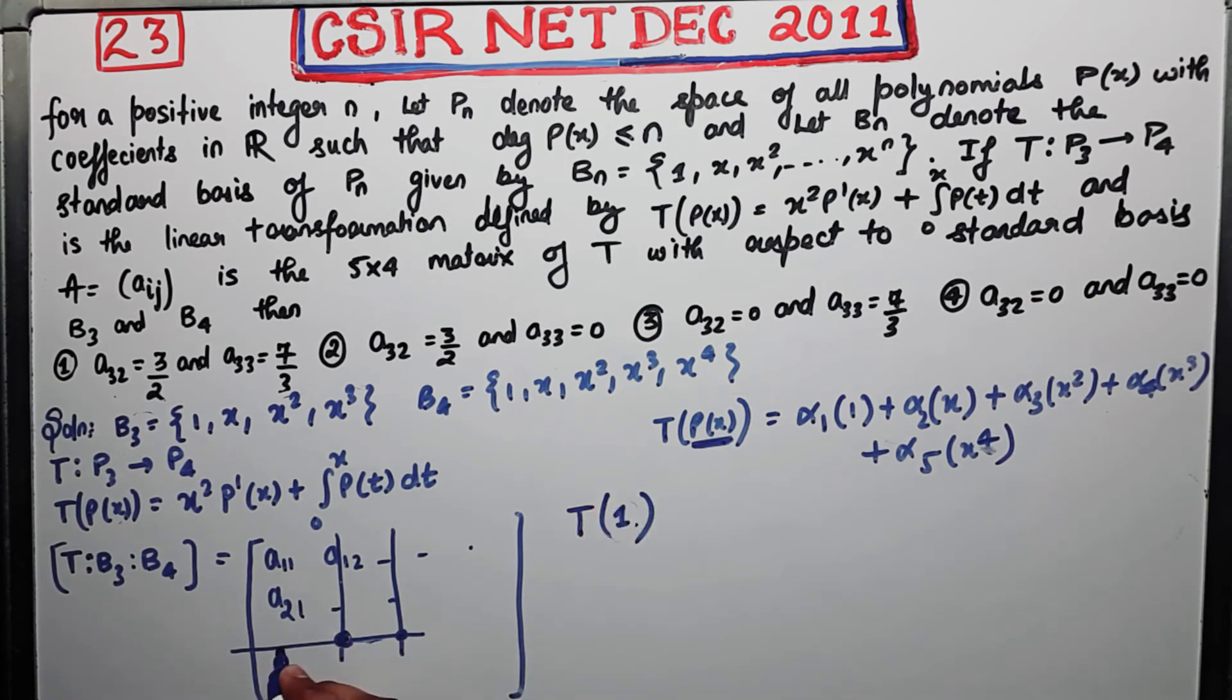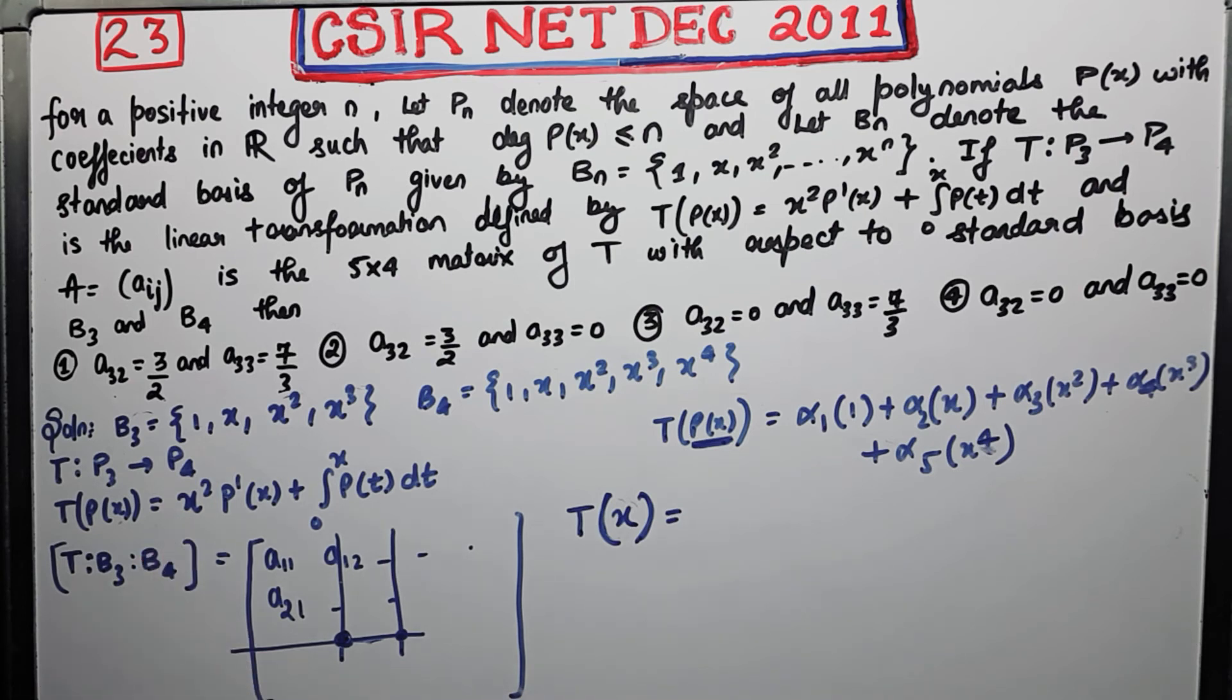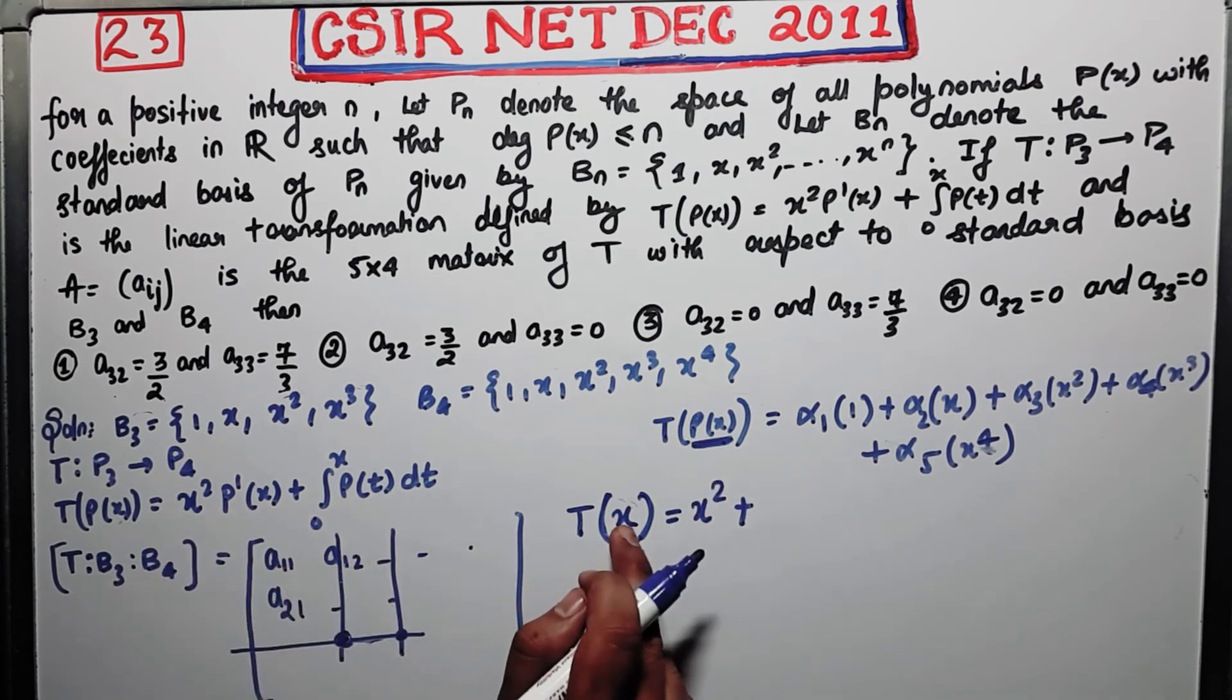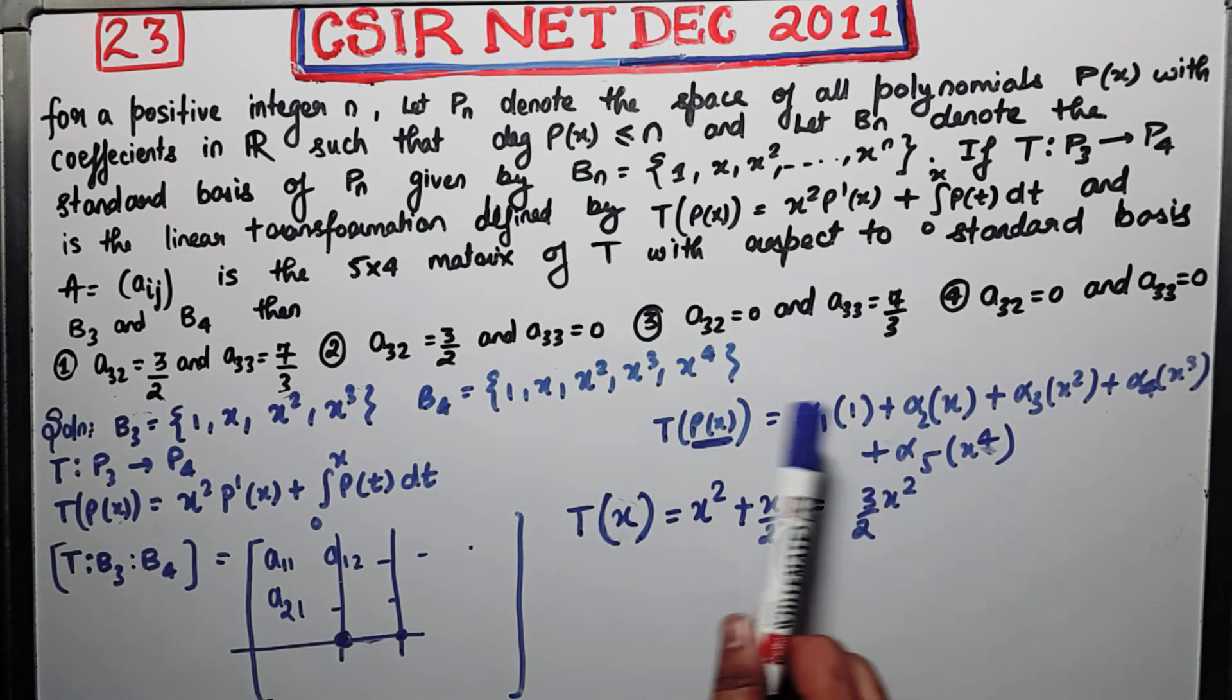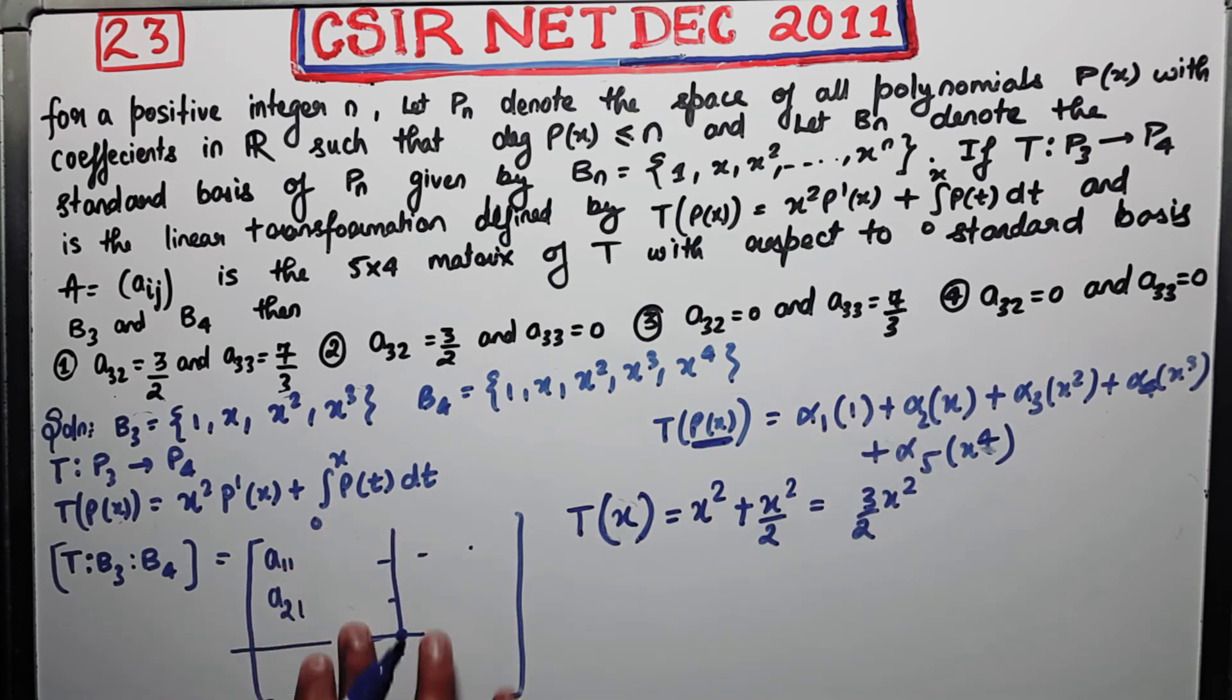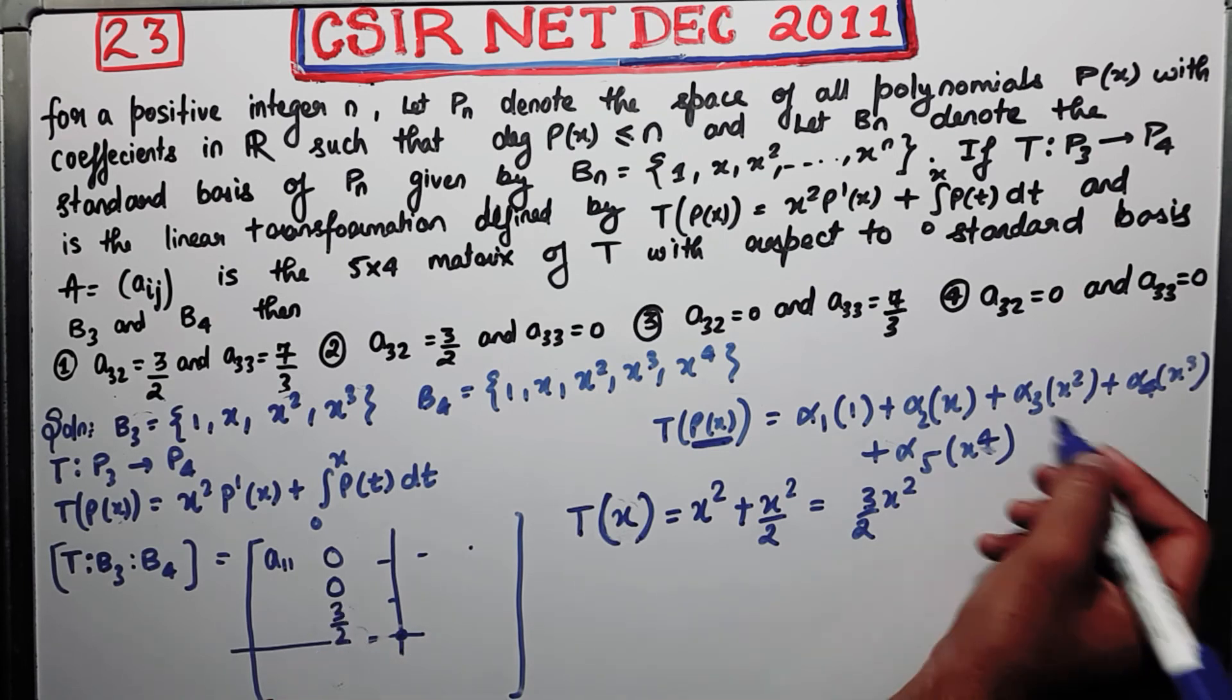Now integrate this. So what is your p(x)? p(x) is x. What is your p(t)? p(t) is t, so after integrating you will get x² over 2. So that means what you will get, you will get 3/2 of x². Now just compare the coefficients. By comparing the coefficients what you will get? You will get α₁ to be 0, α₂ to be 0, but α₃ is 3/2, after this you will get 2 more zeros.